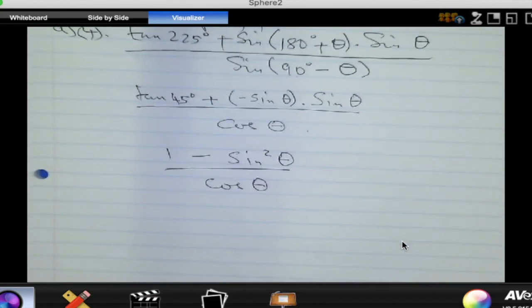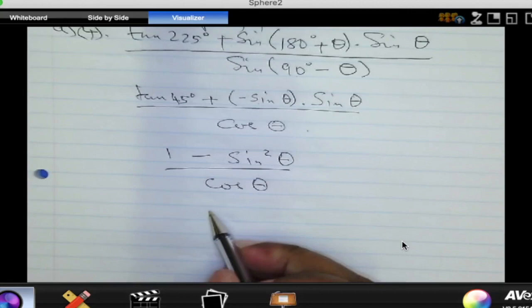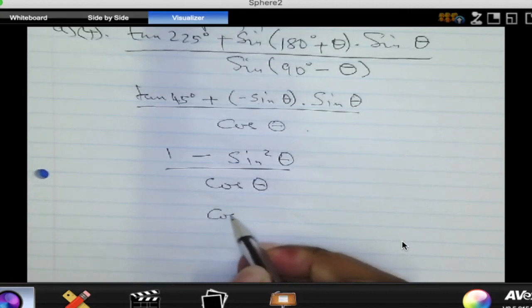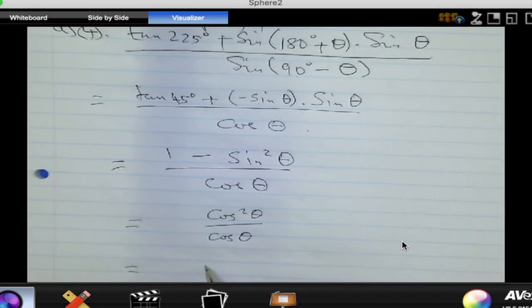Do we have an identity for 1 minus sine squared of theta? Yes. And it is? It is cosine squared of theta, right? Which will give us? Which will give us cosine of theta. So, yeah, that simplifies to cosine of theta.